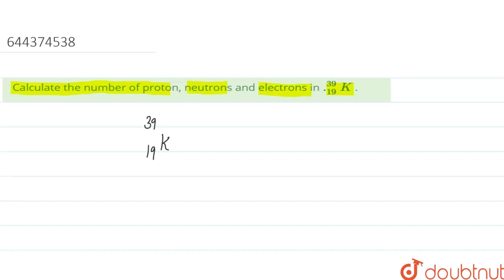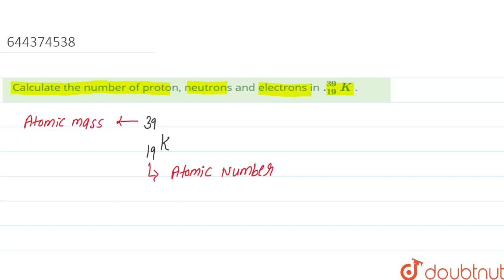Where 19 represents the atomic number of potassium, and 39 represents the atomic mass of potassium. So the atomic number of the given element potassium is 19, and the atomic mass of potassium is 39.